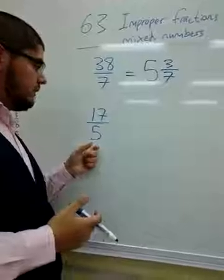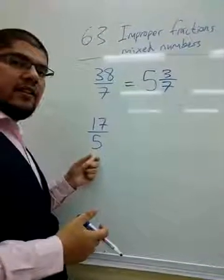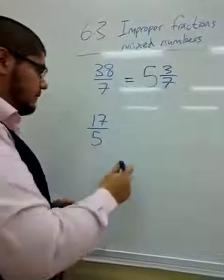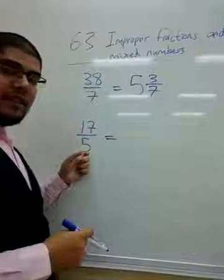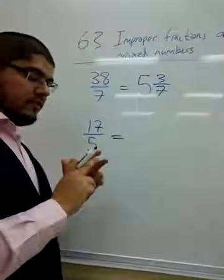Let's do another example. Let's take 17 over 5, and make it a mixed number. How many times does 5 go into 17? Use your 5 times table. 5, 10, 15.